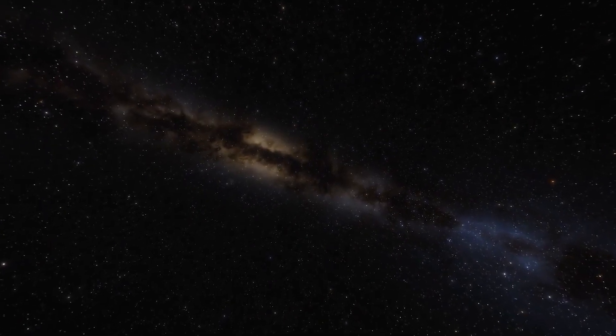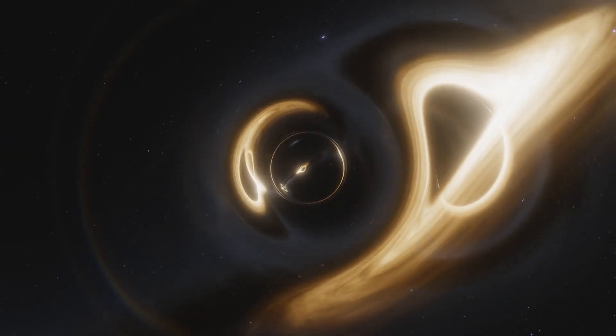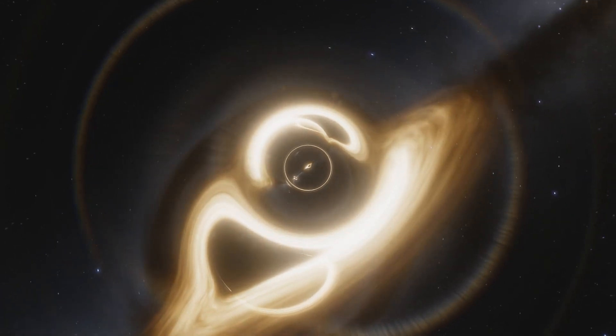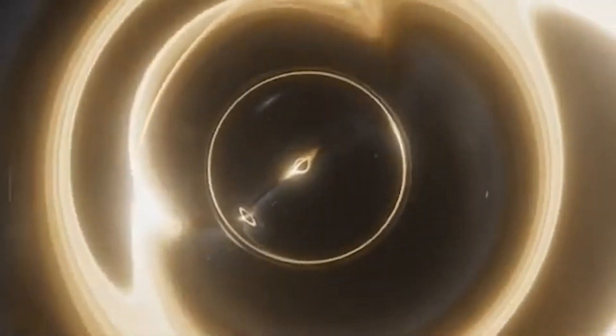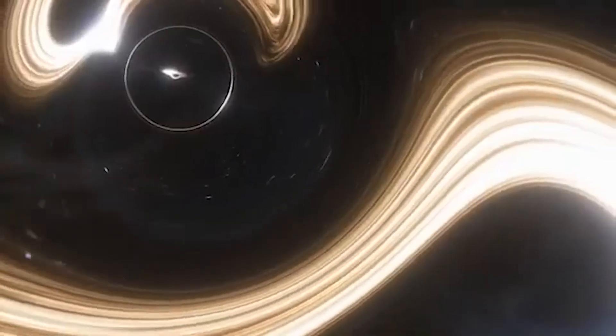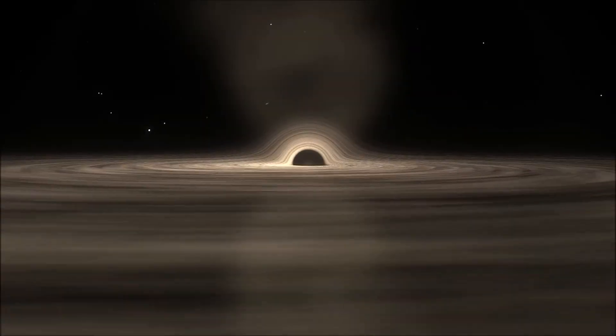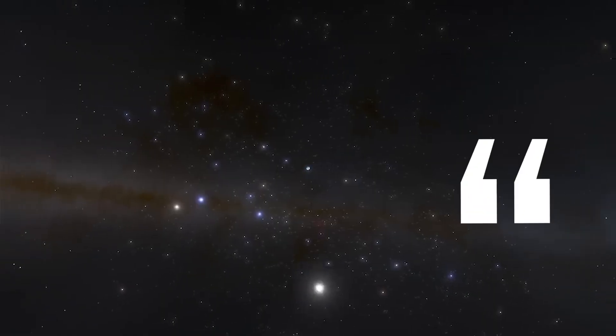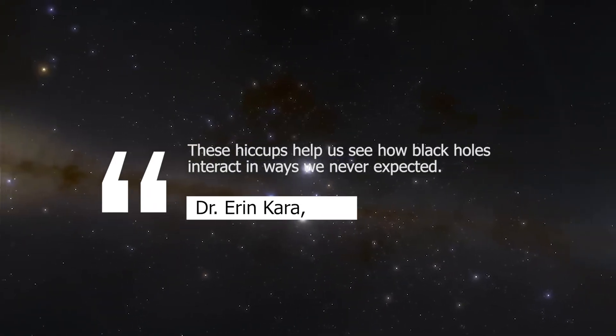Let's imagine that millions of light years away, a small black hole is causing chaos by disrupting the swirling matter around a much larger one. These disruptions, which scientists call hiccups, are like cosmic disturbances that send ripples through the larger black hole's disk, temporarily stopping it from feeding. Dr. Aaron Kara, an astrophysicist at MIT, explains, these hiccups help us see how black holes interact in ways we never expected.